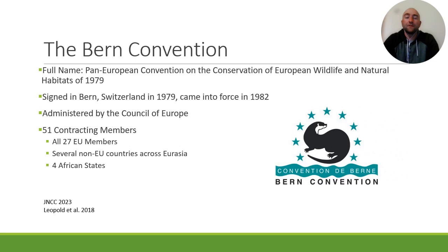Now let's talk about the Bern Convention. The full name is the Pan-European Convention on the Conservation of European Wildlife and Natural Habitats of 1979. It gets its name because it was signed in Bern, Switzerland in 1979, but did not come fully into effect until 1982. It's administered by the Council of Europe. Currently there are 51 contracting members, including all 27 EU member nations, non-EU countries across Eurasia such as the UK, the Balkan Peninsula, and Norway, and also four African states: Burkina Faso, Morocco, Tunisia, and Senegal.